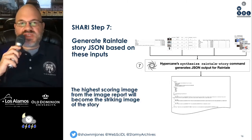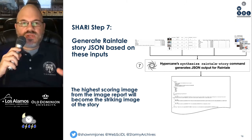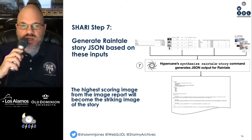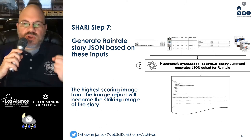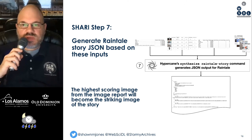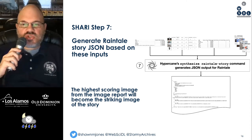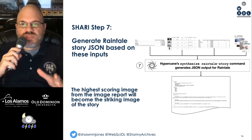In Sherry, step seven, we generate a RainTail JSON file that is suitable for input into RainTail — Hypercane can do this as well. At this point, Hypercane uses the image report to discover the highest scoring image, which becomes the striking image for the story. It also maintains the order of mementos and ensures that sumgrams, entities, and other things are represented.